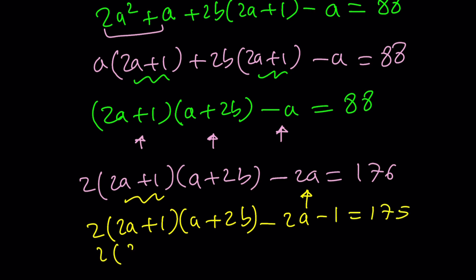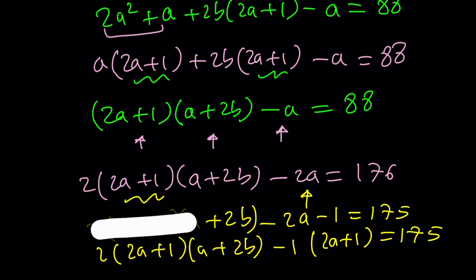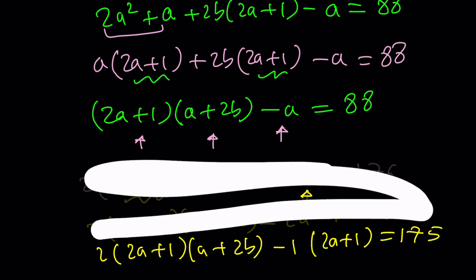Now notice that if you factor out a negative 1, this will become 2a + 1, which will make this factorable by grouping. So here's what we're going to do. Hopefully you got the work. Take a screenshot if you want to. That's fine, because I'm going to erase everything except for the last line.